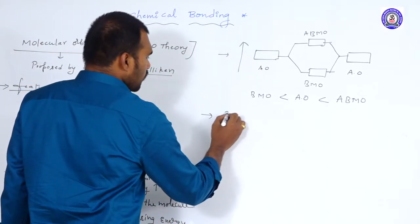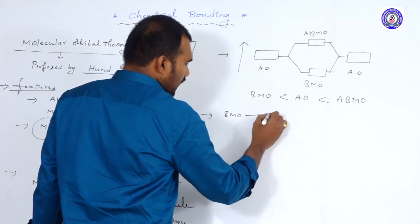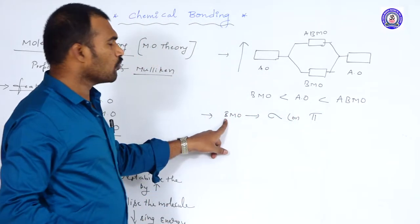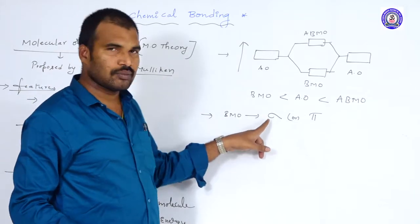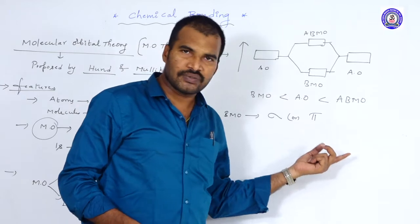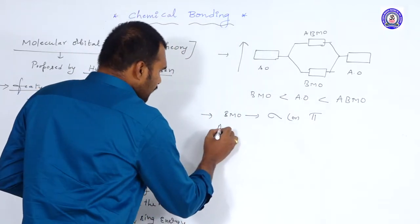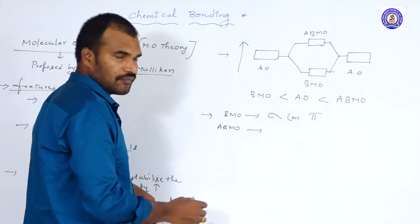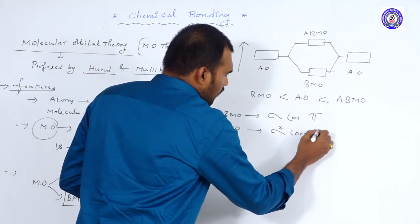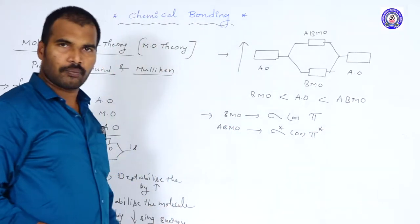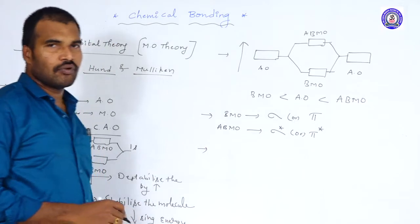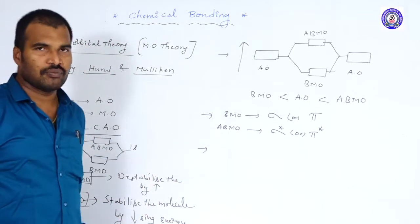Bonding molecular orbitals are represented with either sigma (σ) or pi (π). The bonding molecular orbitals participating in sigma bonding are represented with sigma, and those participating in pi bonding are represented with pi. Anti-bonding molecular orbitals are represented with sigma star (σ*) or pi star (π*). These are the representations for bonding and anti-bonding molecular orbitals.